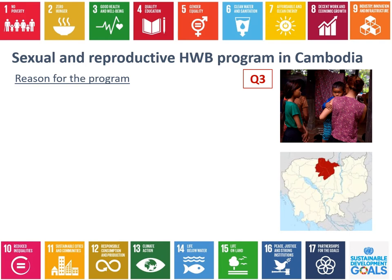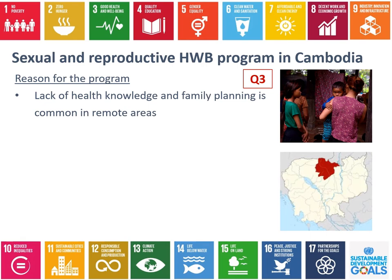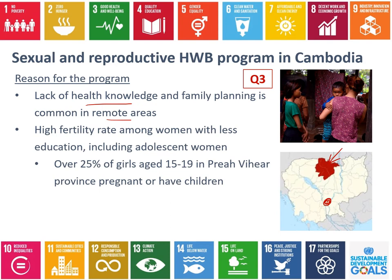The reason for the sexual and reproductive health program in Cambodia: in general, there is a lack of health knowledge in many parts of Cambodia, particularly in remote areas. This province is the area where the program is run - very far from the capital city, with very limited access to health knowledge and family planning services. There's quite a high fertility rate, meaning women in these areas tend to have lots of children, especially compared to city areas.